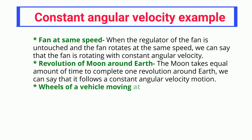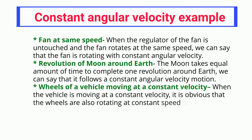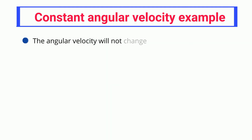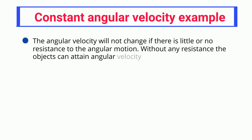Revolution of the Moon around Earth: the Moon takes an equal amount of time to complete one revolution around Earth, so it follows constant angular velocity motion. Wheels of a vehicle moving at constant velocity: when the vehicle moves at constant velocity, the wheels rotate at constant speed, i.e., constant angular velocity. Angular velocity will not change if there is little or no resistance to the angular motion.